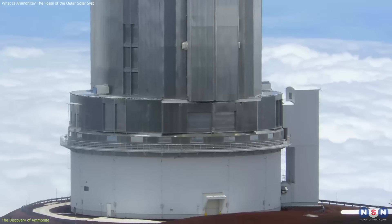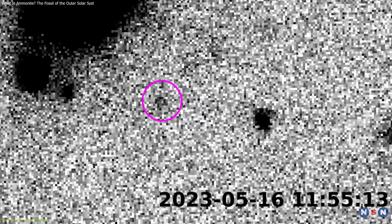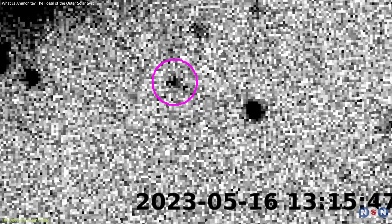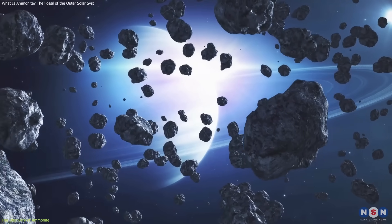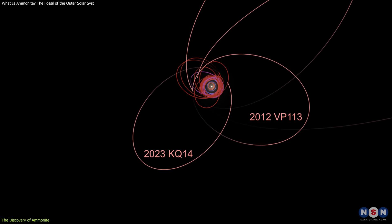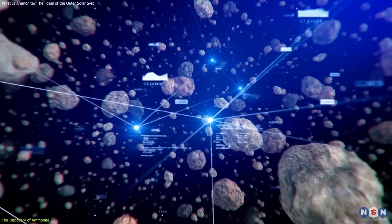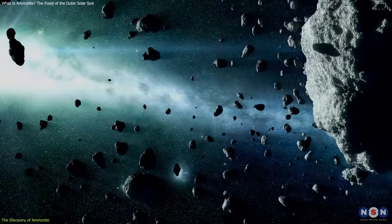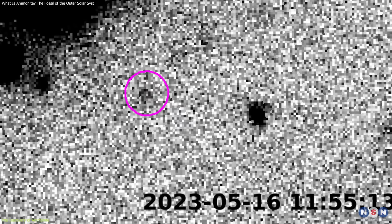In 2023, astronomers using the Subaru telescope in Hawaii spotted something unusual, a faint, slow-moving object drifting against the backdrop of distant stars. It wasn't just another icy fragment beyond Neptune. This one had a story buried in its path. Part of the fossil survey, a project aimed at mapping the solar system's most remote icy bodies, the object was officially designated 2023 KQ14.